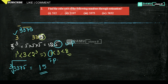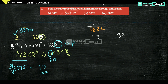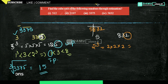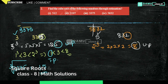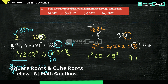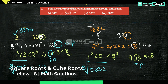Next one is 5832. Divide into two groups: '5' and '832'. The unit digit is 2, and 2³ = 8, so the units digit of the cube root is 8. For the first group, 5 lies between 1³ = 1 and 2³ = 8, so 1 < 5 < 8 — the least value is 1, giving the tens place. Therefore, cube root of 5832 = 18.